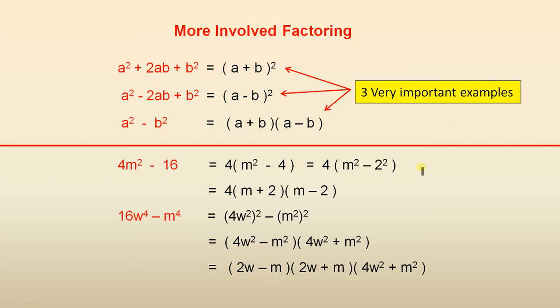Let's look at factoring 4m² minus 16. Now 4m² minus 16 is 4(m² - 4). That's pretty obvious because 4 is the highest common factor of 4 and 16. Now m² minus 4 is m² minus 2².